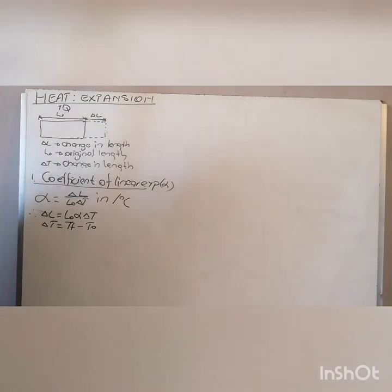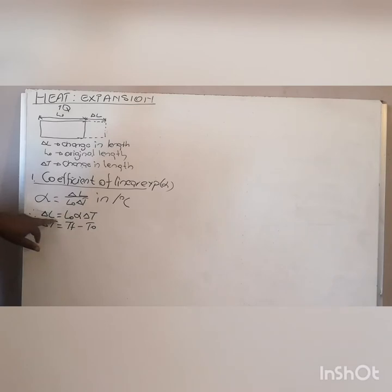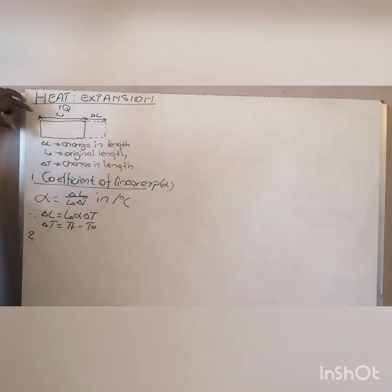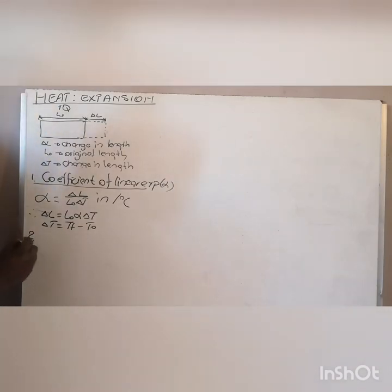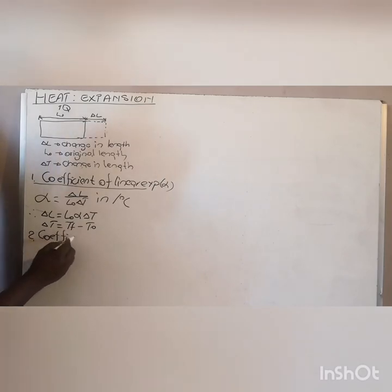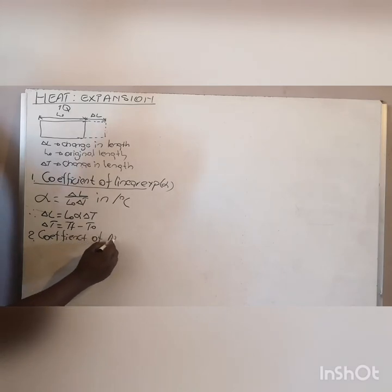This is the first coefficient — very important. Be able to define it and then derive this equation, which is found on the formula sheet, and this is how it was derived. Secondly, if you're looking at two dimensions of this material, you'll see what is called the coefficient of area expansion.